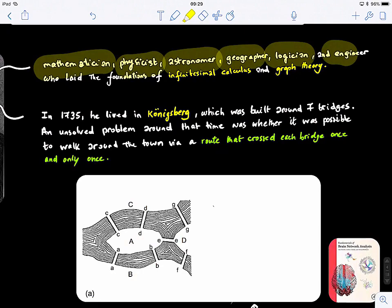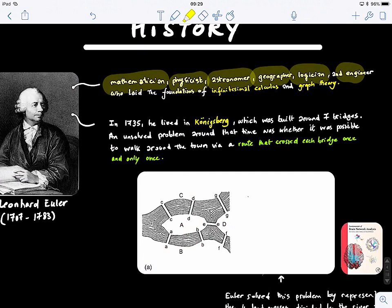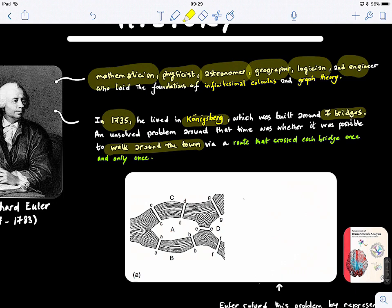Let me explain the problem that he outlined. Euler in 1735 lived in a city called Königsberg, which was built around seven bridges. An unsolved problem around that time was whether it was possible to walk around the town via a route that crossed each bridge once and only once.